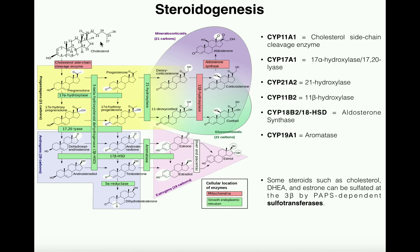In this video we're going to discuss steroidogenesis, which is the process or pathway by which some cells can manufacture steroids such as aldosterone, estradiol, and testosterone from the parent steroid known as cholesterol. Cholesterol has a variety of other functions — stabilizing cell membranes, manufacturing bile acids for fat emulsification — but arguably one of the most important is its conversion into all of these steroids shown in this diagram.